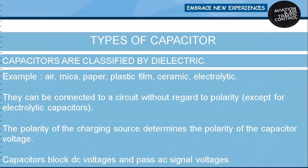Types of capacitors: capacitors are classified by their dielectric. Examples include air, mica, paper, plastic film, electrolytic, and ceramic. They can be connected to a circuit without regard to polarity, except electrolytic capacitors. The polarity of the charging source determines the polarity of the capacitor voltage. Capacitors block DC voltages and allow AC signal voltages.